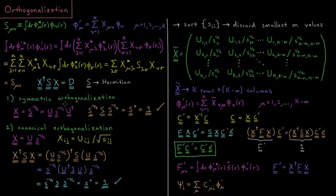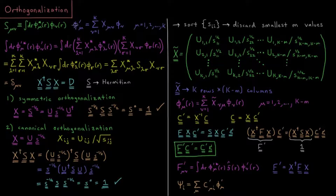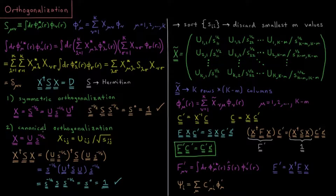Symmetric orthogonalization is not always possible, particularly because not every matrix has an inverse. If you can't invert a matrix — that is, if you can't find S to the negative one — then you can't find S to the negative one-half either. The reason is that as you add more and more basis functions, they become more and more similar, and eventually within numerical noise you end up with eigenvectors that look the same, making inversion impossible. In that special case, you have to use an alternative called canonical orthogonalization.